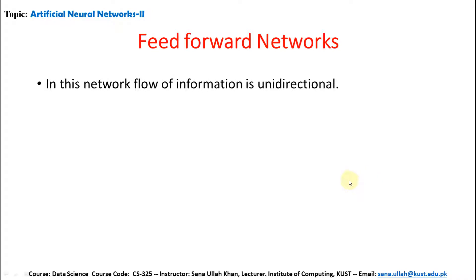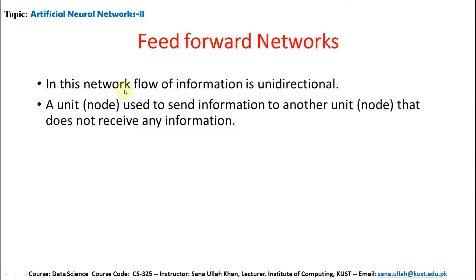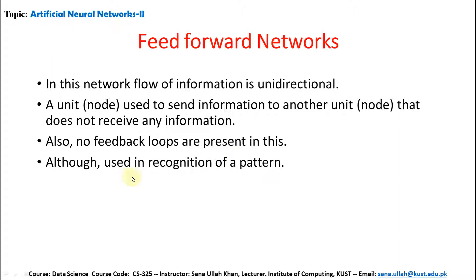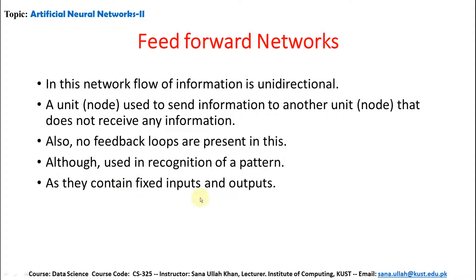What is meant by feedforward networks? In this network, the flow of information is unidirectional — from input to output. A unit or node sends information to another unit or node that does not send any information back. There are no feedback loops, because it is a forward network. Feedforward networks are used in recognition of patterns, as they contain fixed inputs and outputs.